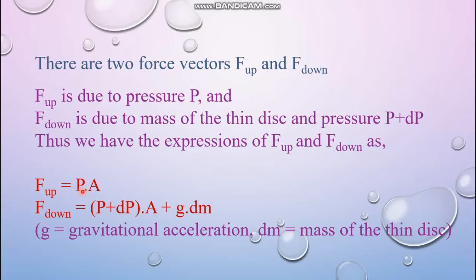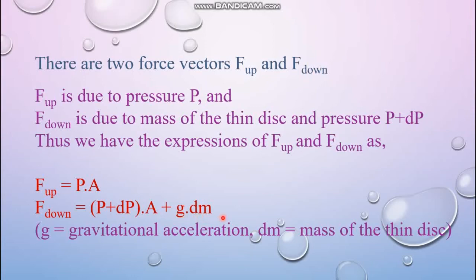F_up equals pressure P multiplied by cross-section area A. The downward force equals (P + dP) × A plus g × dm, where dm is the mass of the thin disc. Multiplying mass by gravitational acceleration gives the dimension of force — just like mg — so g × dm plays the role of the gravitational force term.